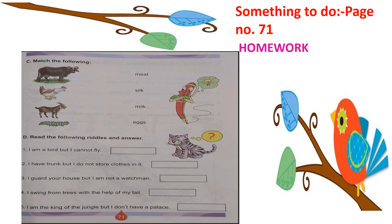Think and find out who that bird is. Second riddle: I have a trunk but I do not store clothes in it. You have to look at the animals and the answer will come easily.